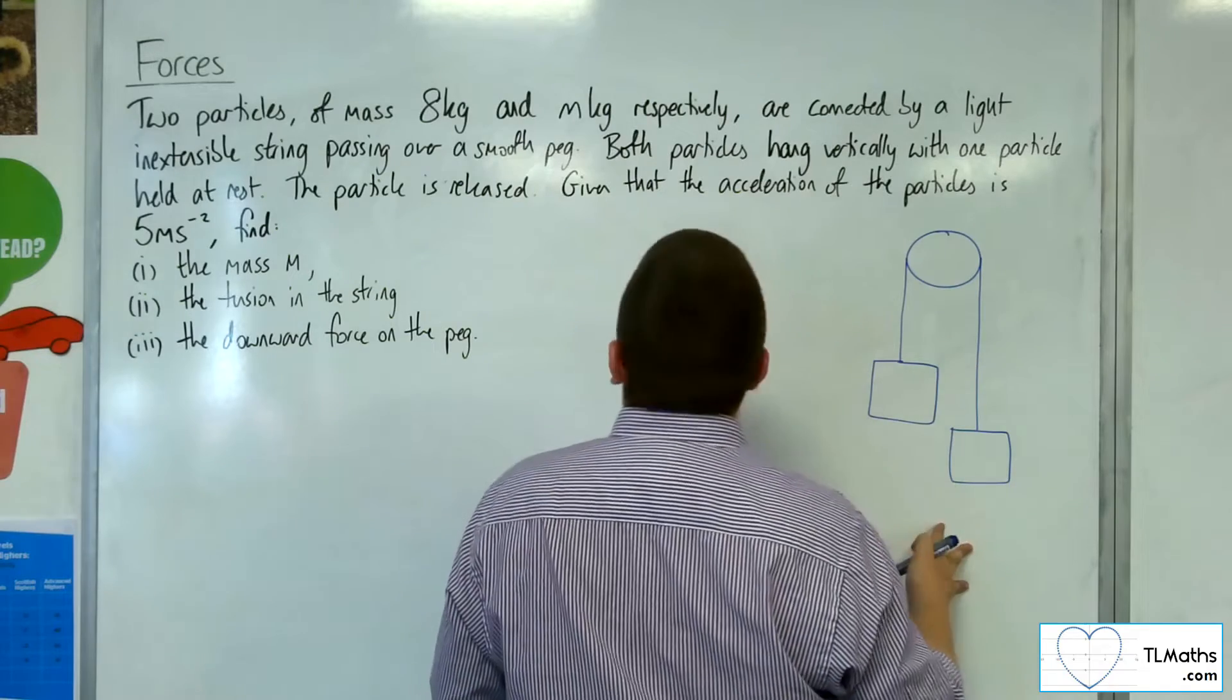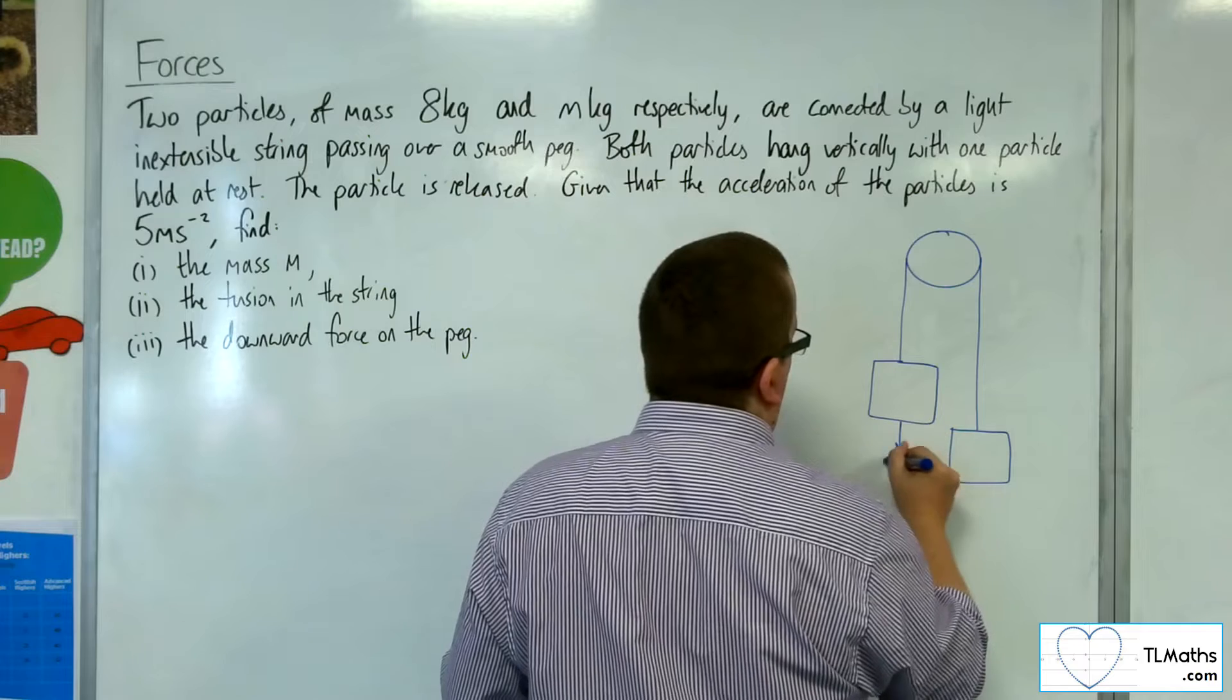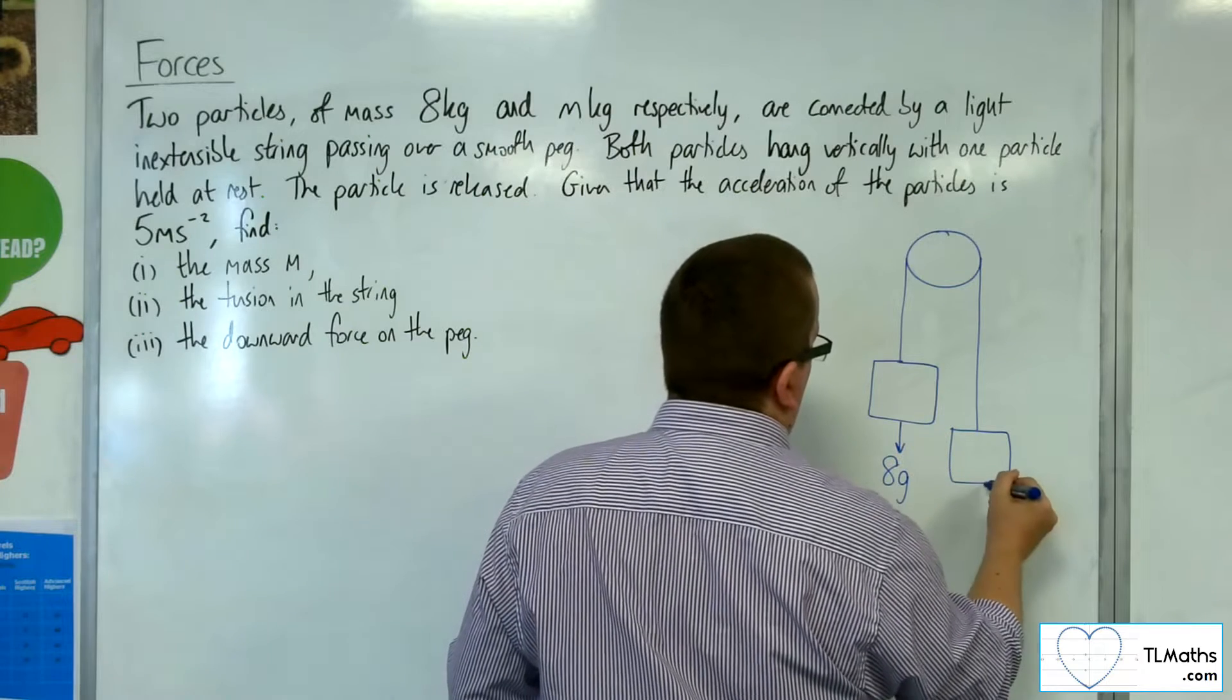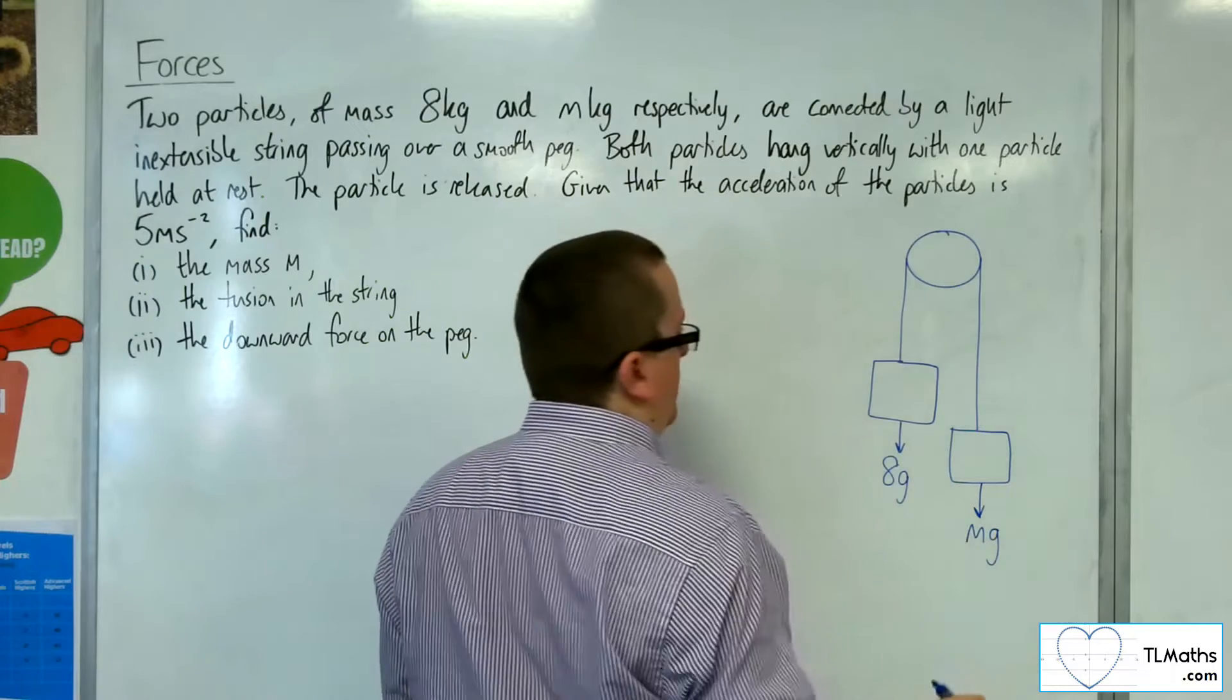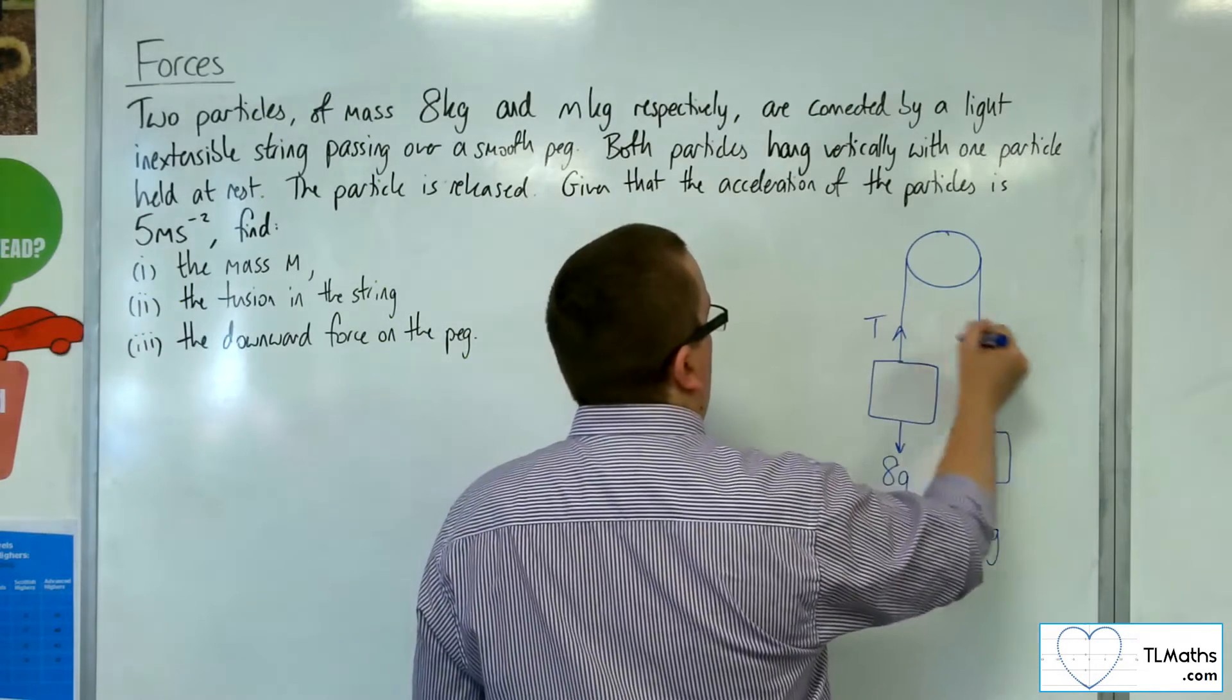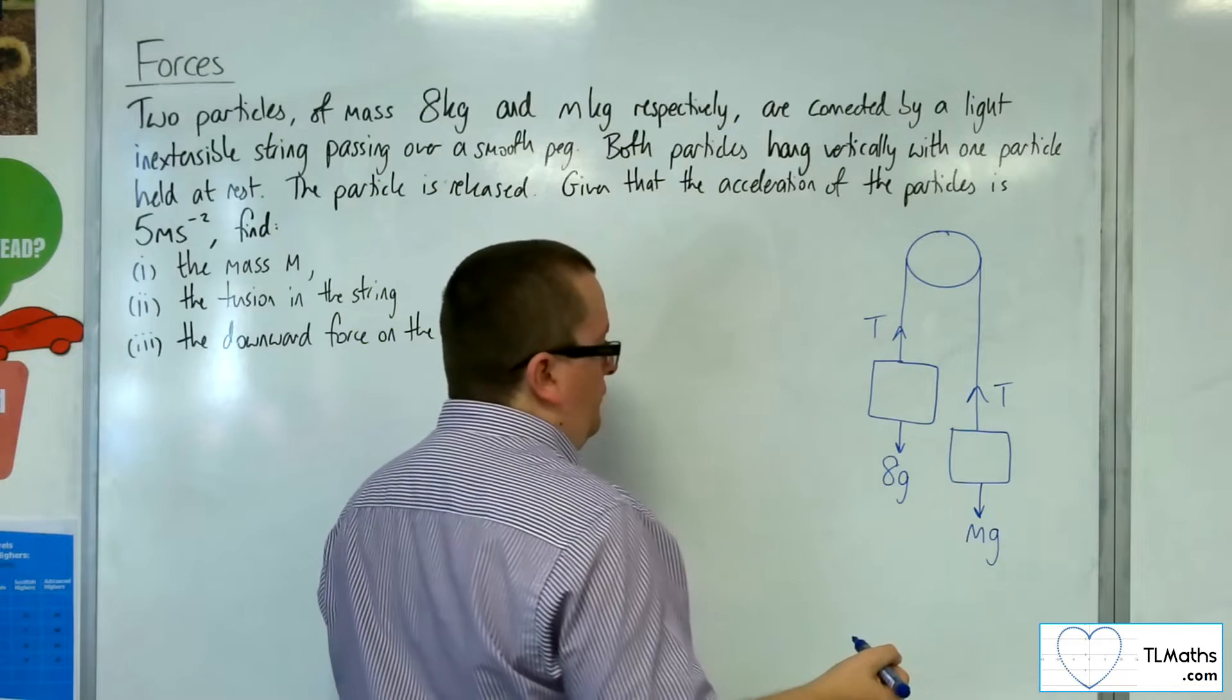So here are my two particles. I know the first particle has mass 8 kilos, so that means it's got a weight of 8g. The second particle has a mass of m kilos, and so that's got a weight of mg. We've got the tension in the string. Let's call that capital T.